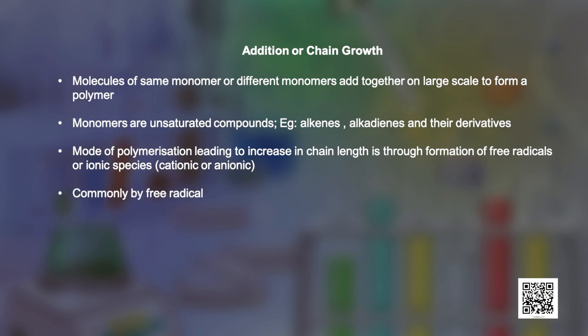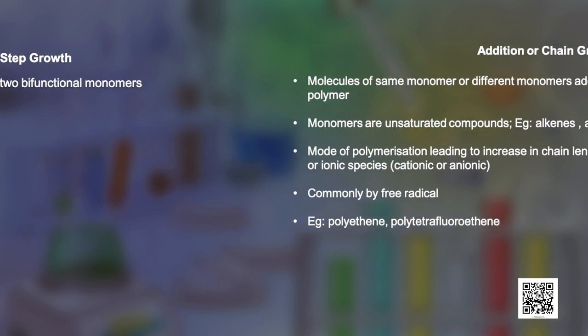However, the free radical governed addition or chain growth polymerization is the most common mode. In this session we will focus on free radical mechanism only. The common examples of such polymers are polythene and polytetrafluoroethene, also known as Teflon.